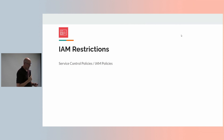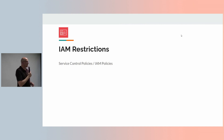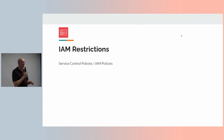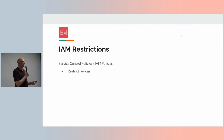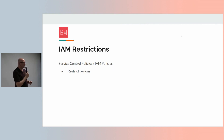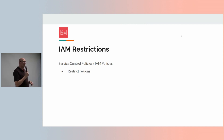IAM restrictions. There are service control policies (SCPs) and IAM policies. IAM policies are what you assign to groups. Service control policies are at the organization level and effectively override your IAM policies — they determine the maximum set of permissions allowed across an organization. You can restrict what regions you can use: say you only ever use Ireland as a region, why would anyone need to spin something up in Africa or the US? You can set up a policy so if someone tries to create anything in a disallowed region, they get a deny error even if they have administrator access in that account.